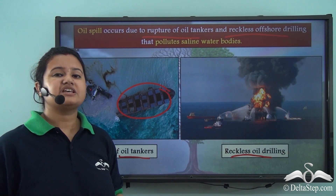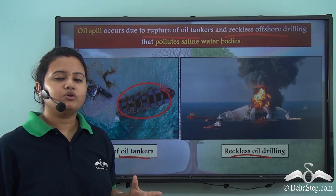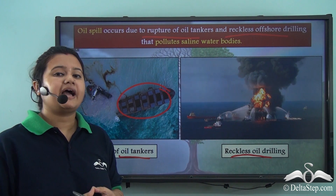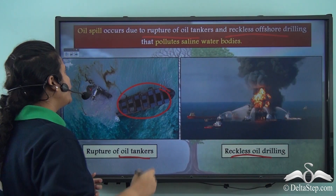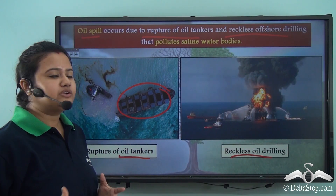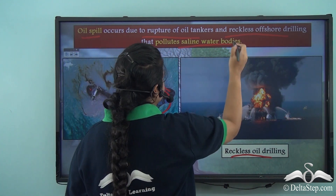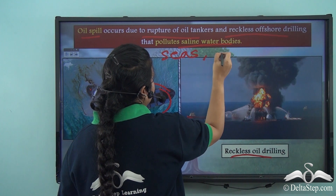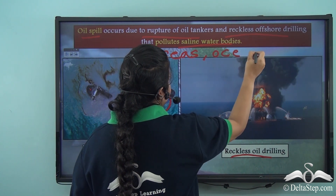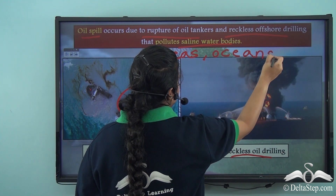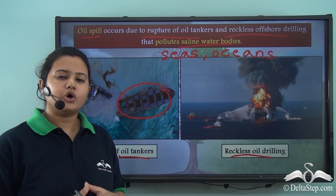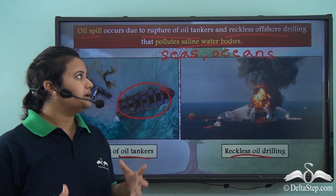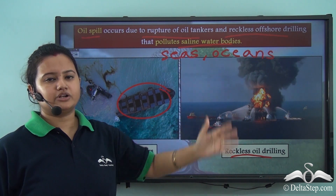These activities release substantial quantities of oil onto the surface of saline water bodies and pollute them. Thus, oil spill leads to pollution of saline water bodies like seas or oceans. Now apart from oil spill there are other factors that lead to the pollution of saline water bodies.